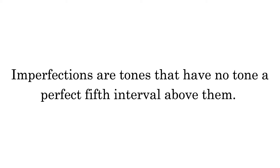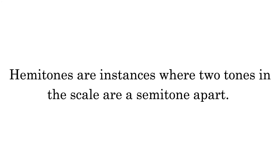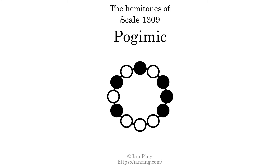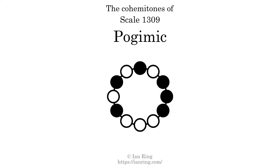Imperfections are tones that have no tone a perfect fifth interval above them. This scale has 4 imperfections, at four positions shown. Hemetones are instances where 2 tones in the scale are a semitone apart. This scale has 2 hemetones at two positions shown. Co-hemetones are instances where 2 hemetones are beside each other. This scale has 1 co-hemetone.